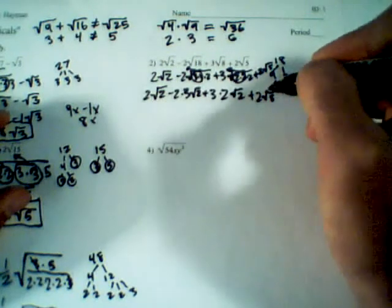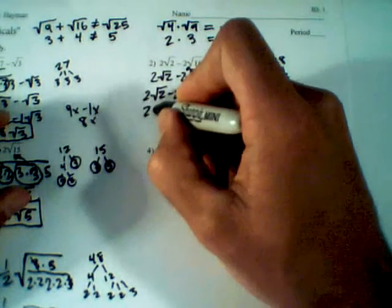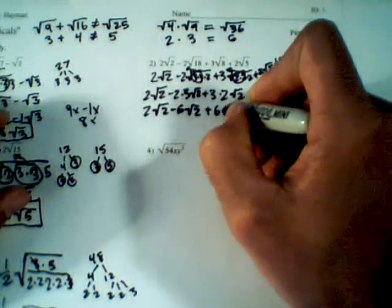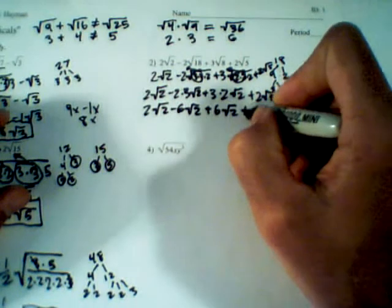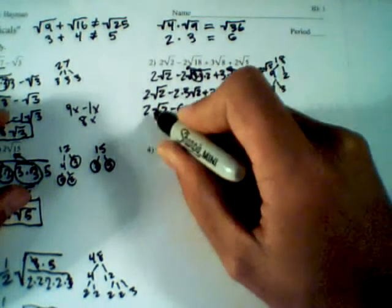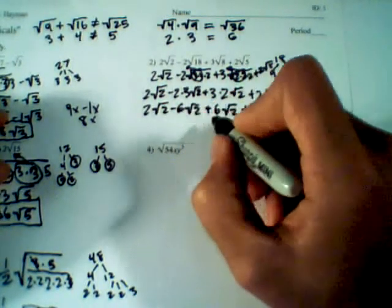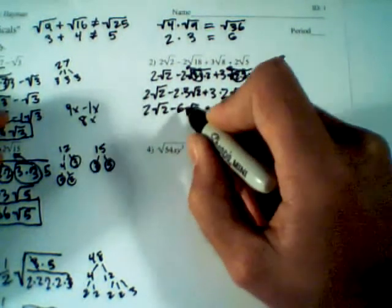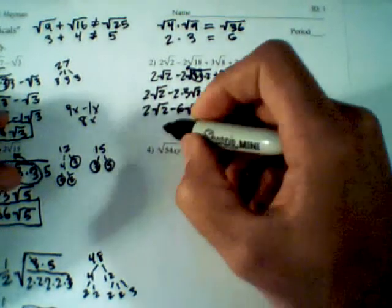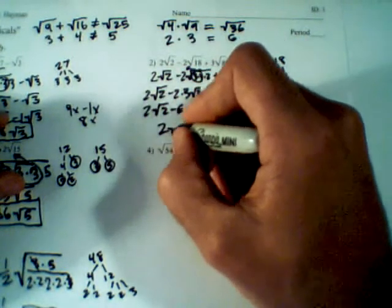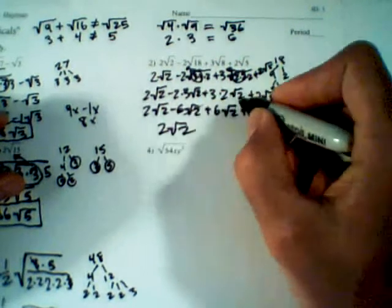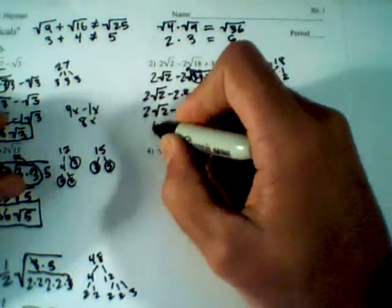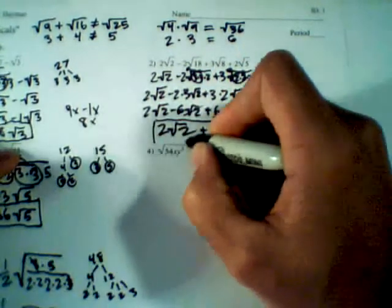Cleaning that up: we have 2 root 2, minus 6 root 2, plus 6 root 2, plus 2 root 5. These are all like radicals, so we combine the coefficients. Positive 6 and negative 6 cancel to zero, leaving only 2 root 2. Plus 2 root 5 remains because root 2 and root 5 are not like radicals. That's our final answer: 2 root 2 plus 2 root 5.